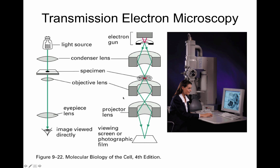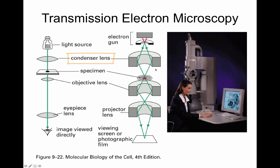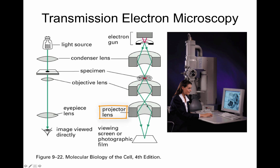Next, we are going to look at the transmission electron microscope. Take a look at the previous image so you can compare the lenses and the organization of the scope between the transmission electron microscope and the scanning electron microscope. Again, both of them have an electron gun that is going to generate the electrons showered into the sample. You have a condenser lens that is going to focus the electrons on the specimen, shown here in a grid. After that, you have the objective lens and a projector lens, which is similar to the eyepiece, that then allows for the visualization of the sample.